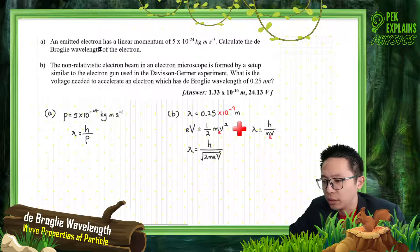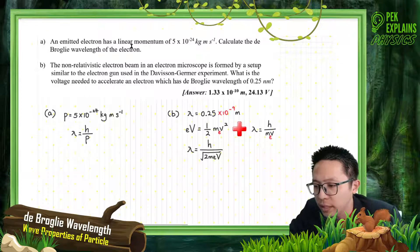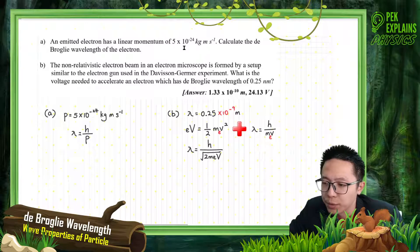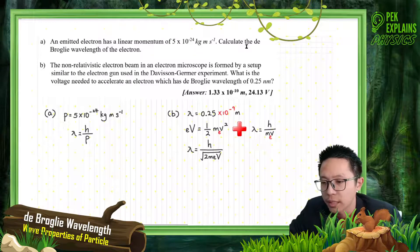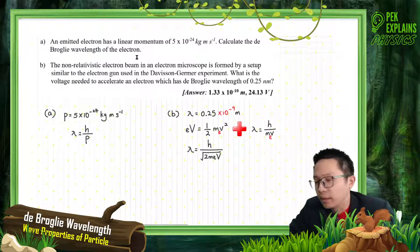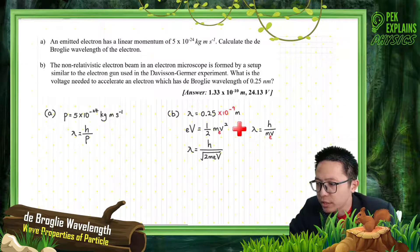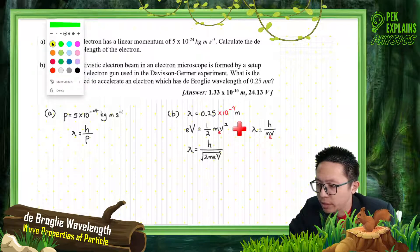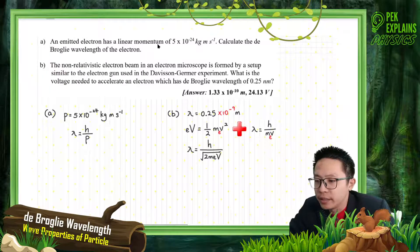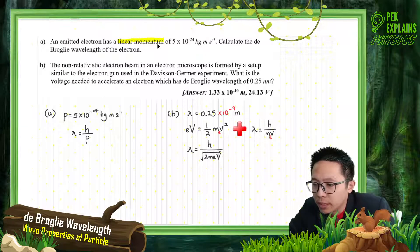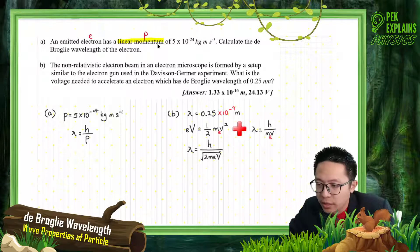An emitted electron has a linear momentum of 5×10⁻²⁴ kilogram meter per second. Calculate the De Broglie wavelength of the electron. This question provides us the linear momentum — symbol P. We are using an electron, and we need to find the De Broglie wavelength.